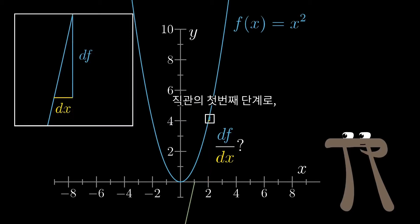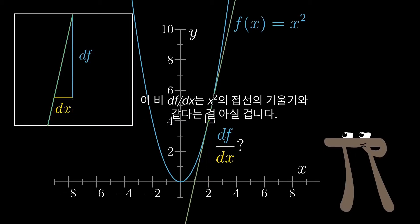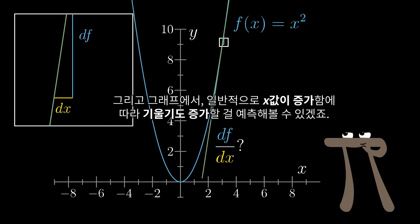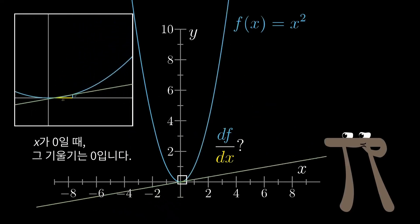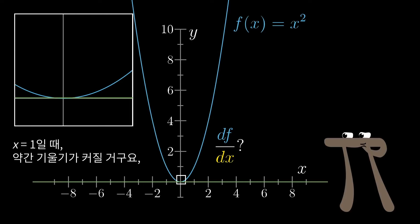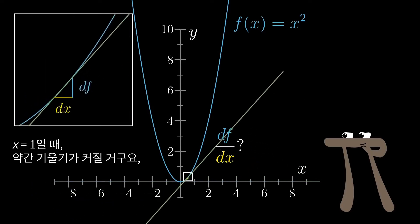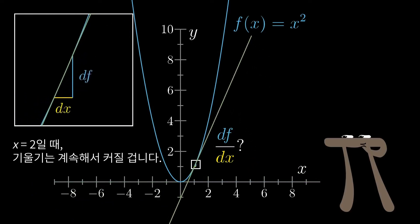As a first step for intuition, we know that you can think of this ratio df/dx as the slope of a tangent line to the graph of x squared. And from that, you can see that the slope generally increases as x increases. At 0, the tangent line is flat, and the slope is 0. At x equals 1, it's something a bit steeper. At x equals 2, it's steeper still.